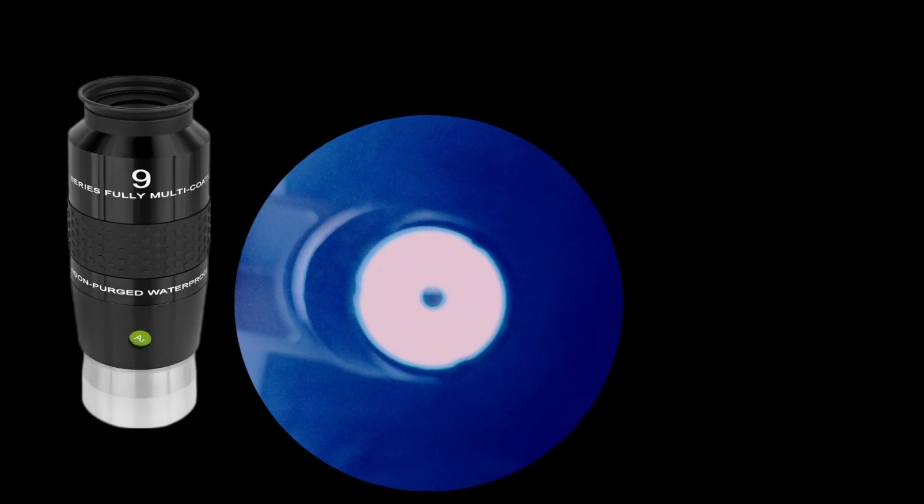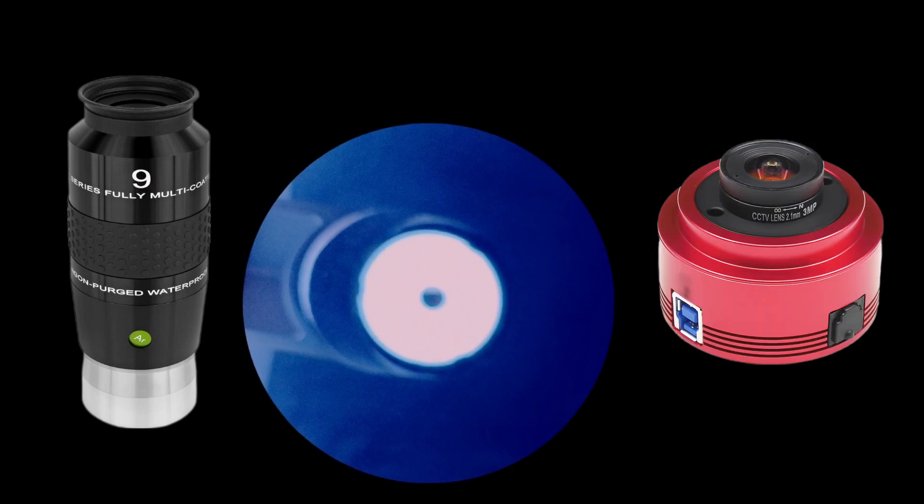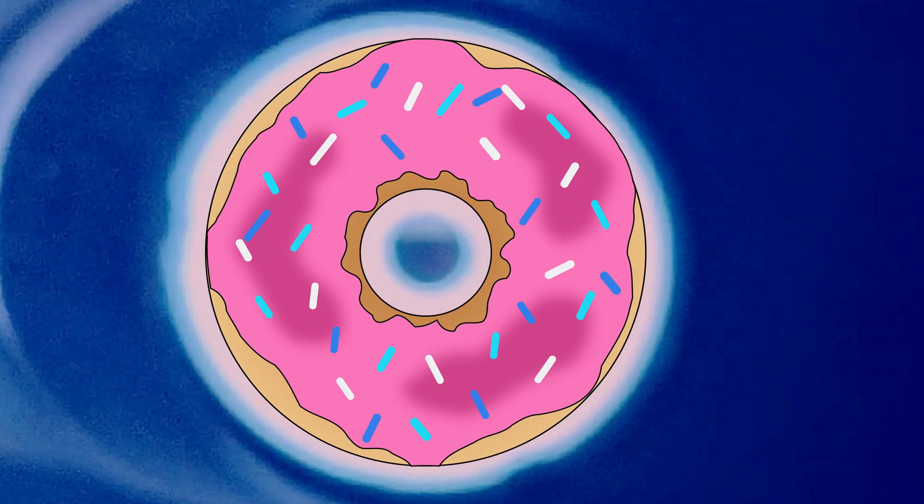If you look through the focuser without inserting any eyepiece or camera, you will see that real image. And if you insert an eyepiece or camera into the focuser and you still see that big donut shape, that's because you're out of focus. There's nothing wrong with your telescope, it's just that you have to focus.